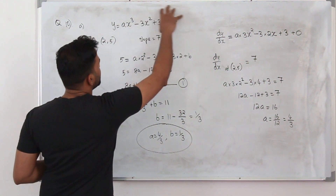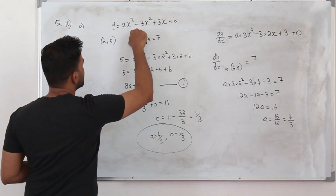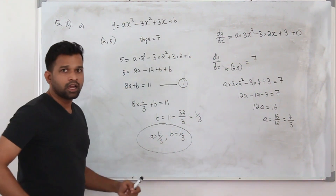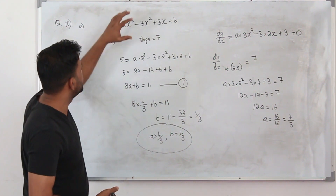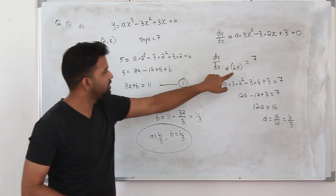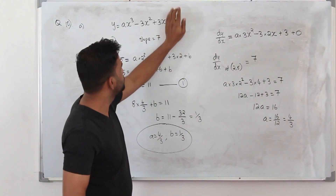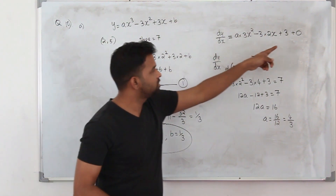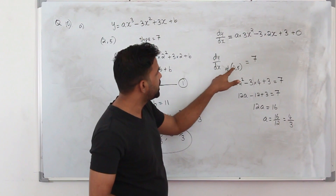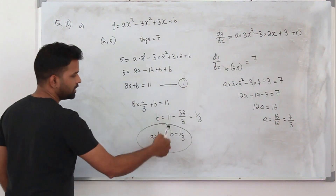To summarize part a: you are given an equation and a point on the curve, so replace x by 2 and y by 5 to form one equation. Then use the second condition — the slope at (2, 5) is 7. Slope means the first derivative. Differentiate, so the constant b becomes 0. Equate the derivative to 7 and replace x by 2 to find a, then substitute a back to find b.